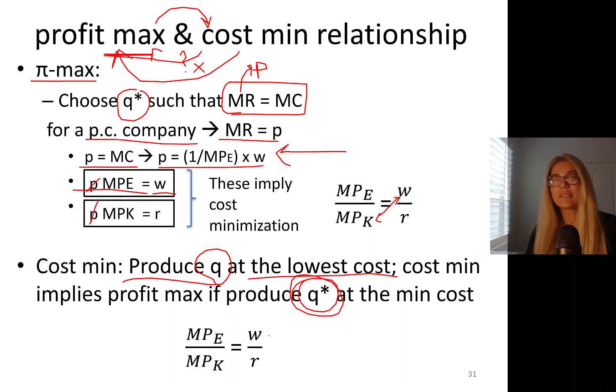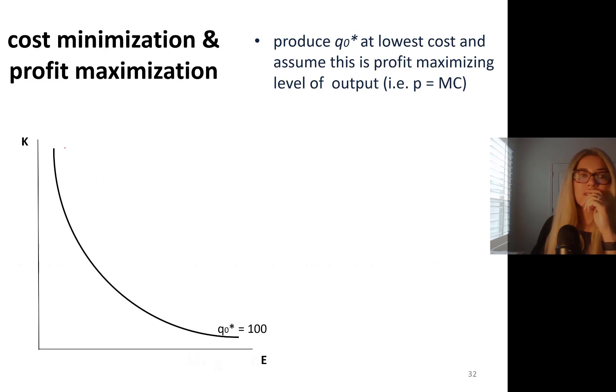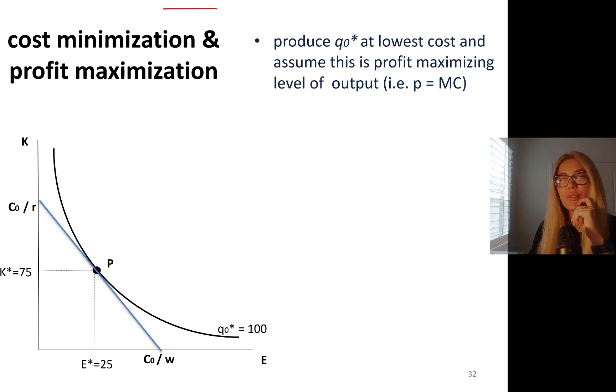If that's the case, then you have profit maximization. So let's see it graphically. Let's say we are producing q0* at the lowest cost, and assume that this q0* when you see star is the best optimal level of output, which means profit maximizing level of output.